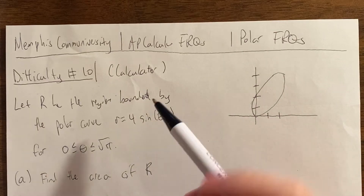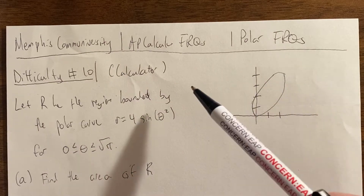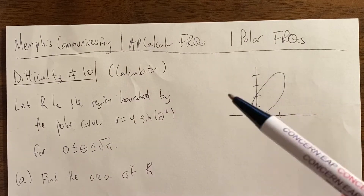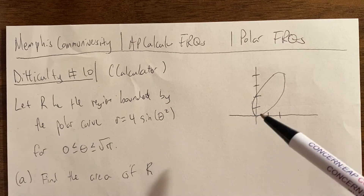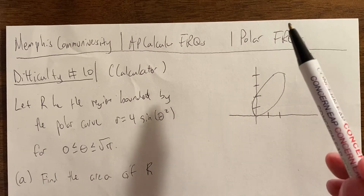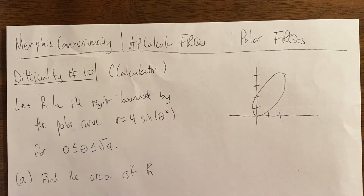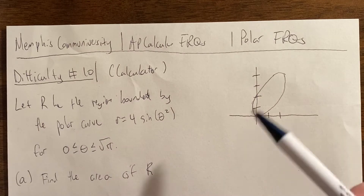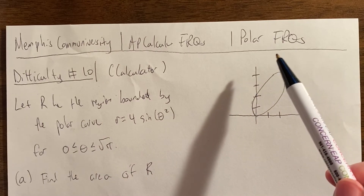Hello, we are Memphis Community University. Today we are going to be practicing an AP calculation for free response question, and today we have quite a challenge on our hands because we are going to be doing the difficulty 10 out of 10 of the polar free response question.